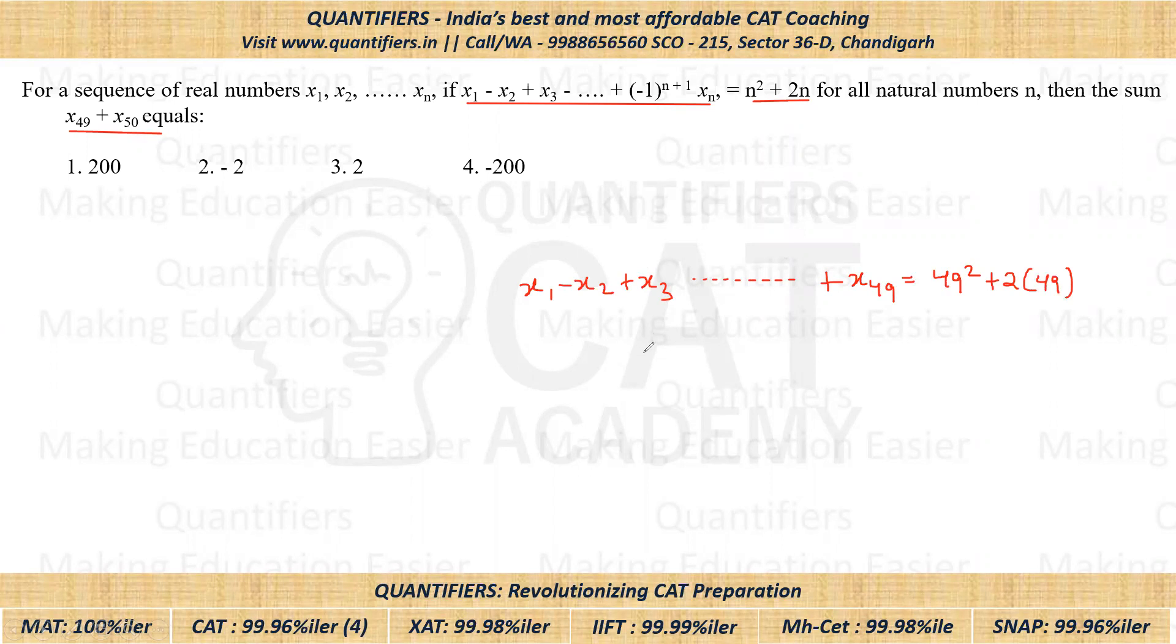Similarly, let us put n is equal to 50. So if I put n is equal to 50, I will get x₁ minus x₂ plus x₃ and so on plus x₄₉. This will get cancelled out. So finally, we will have negative x₅₀. This is equal to 50 square plus 2 times 50.